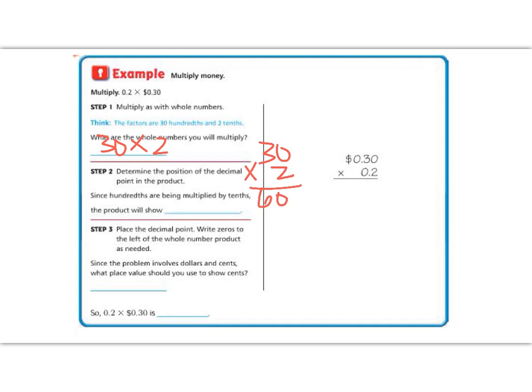So let's look at where our decimal is going to end up. If I have one, two decimal places, and then one decimal place, that means I have three decimal places, which is going to be in the thousands.